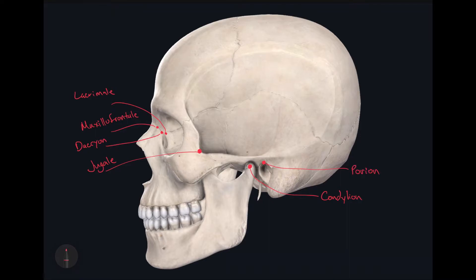The next landmark is right here on the mastoid process of the temporal bone. At the most inferior point of this process is going to be called the mastoidale.